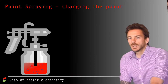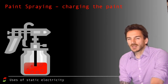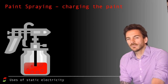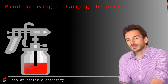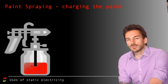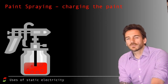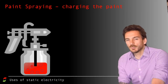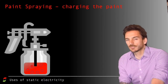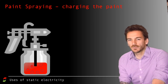Let's have a look at paint spraying. The questions in exams are usually in two parts. The first part is: why do you give paint a static charge? And the second part is: why would you give whatever it is you're painting - in this case a bike frame - an opposite charge? Students often try to merge those two reasons together, but they're two separate reasons and the outcome is beneficial.